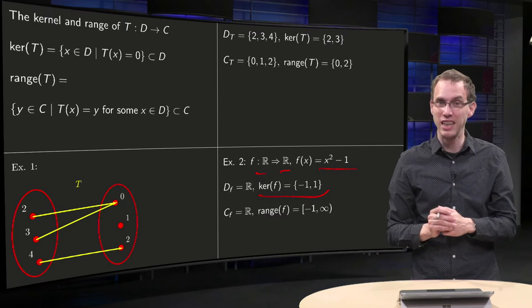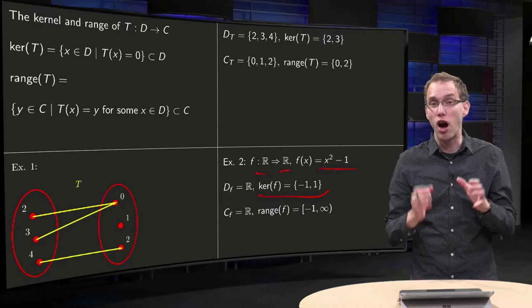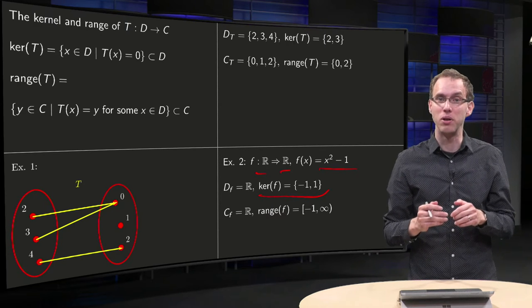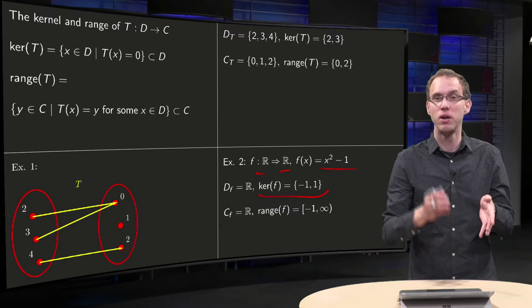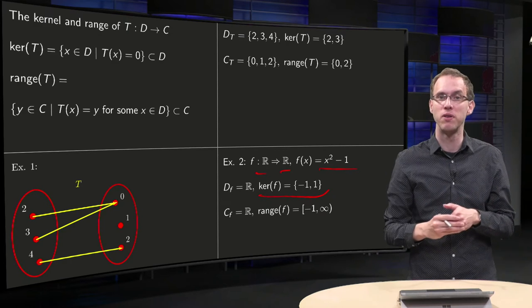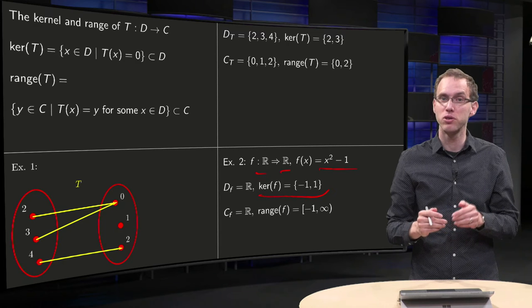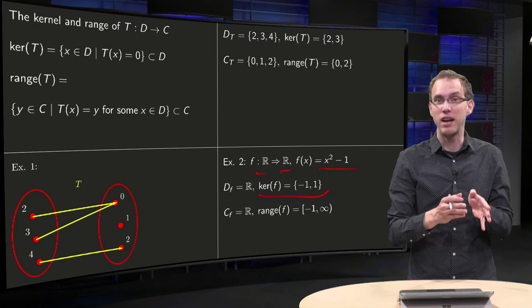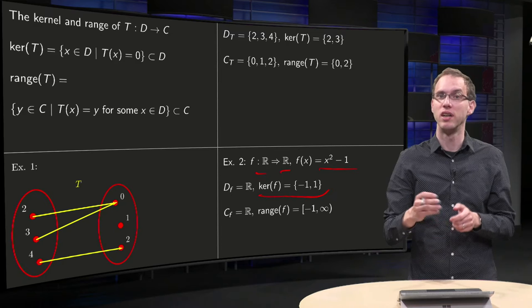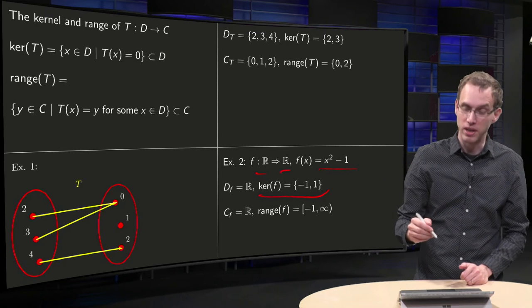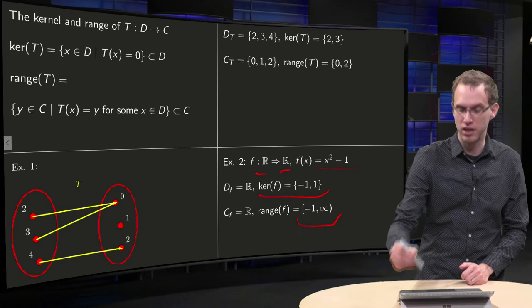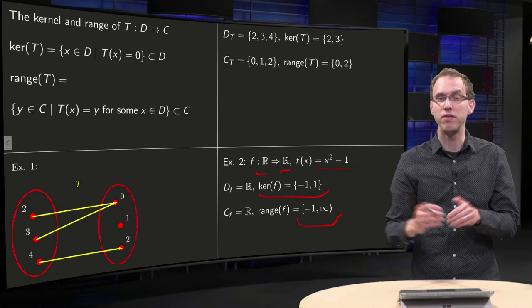What about the range? That is in general also a harder question, but in this case you know this x squared is always positive, so you have minus 1 plus something which is always positive. So you are mapping to values which are either minus 1 or larger. You can reach all larger values by making x large enough. So the range of your function f in this case would be minus 1 to infinity.